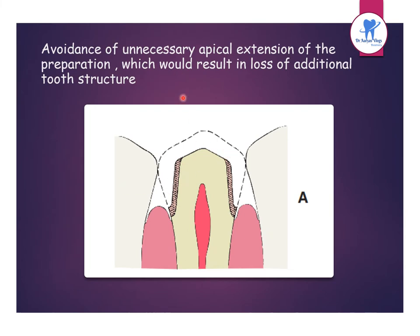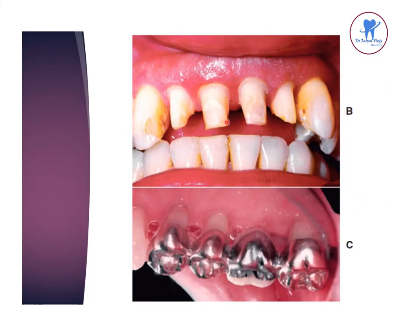Unnecessary apical extension of the preparation should be avoided, as it results in loss of additional tooth structure. For periodontally involved teeth, considerable reduction is needed if margins are placed subgingivally for aesthetics. Supragingival margins are preferred where applicable.